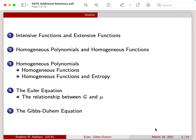We'll then develop the Euler equation. We'll see that it leads to a relationship between the Gibbs free energy and the chemical potential. Then finally, we'll introduce the Gibbs-Duhem equation. The Gibbs-Duhem equation is a relationship linking the three intensive variables that show that they're not independent of each other.